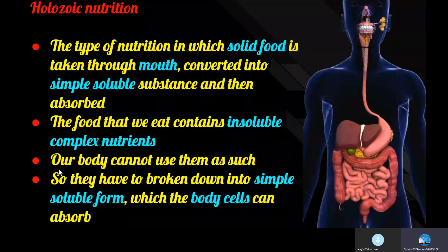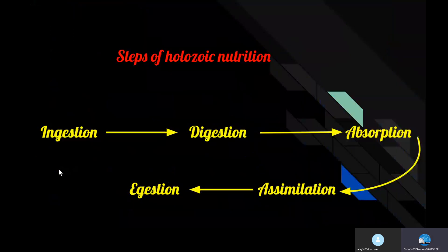This is the nutrition in which animals take in solid food through the mouth and convert it into simple, soluble substances, and then absorb it. This type of nutrition is known as holozoic nutrition. There are five steps of holozoic nutrition: ingestion, digestion, absorption, assimilation, and ejection.